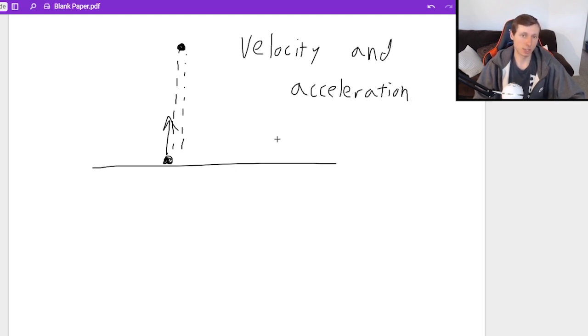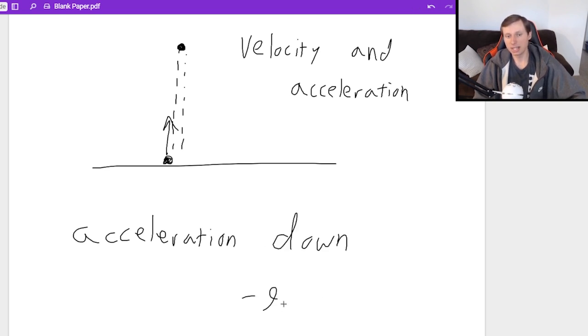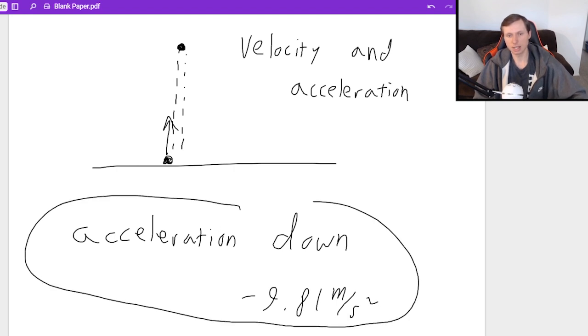So this time we're going to start with acceleration because you should know this. At the peak of flight, the acceleration is the same everywhere. The acceleration points down and again, the value is negative 9.81 meters per second squared. That's the acceleration.